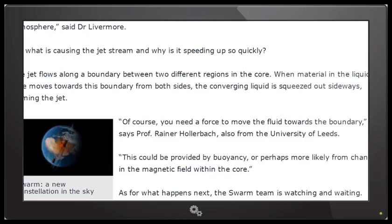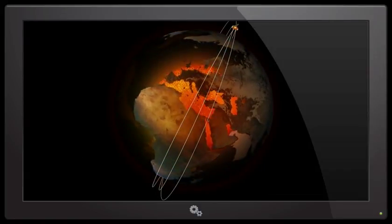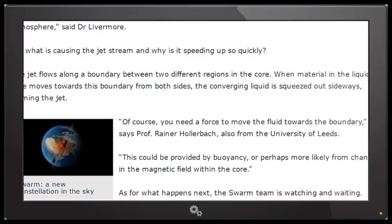Whatever. I can't think. We can explain it as acceleration in a band of core fluid circling the pole, like the jet stream in the atmosphere, said Dr. Livermore. So what is causing the jet stream, and why is it speeding up so quickly? I don't know. Maybe it's because the sun's pregnant? The jet flows along a boundary between two different regions in the core. When material in the liquid core moves towards this boundary from both sides, the converging liquid is squeezed out sideways, forming the jet.